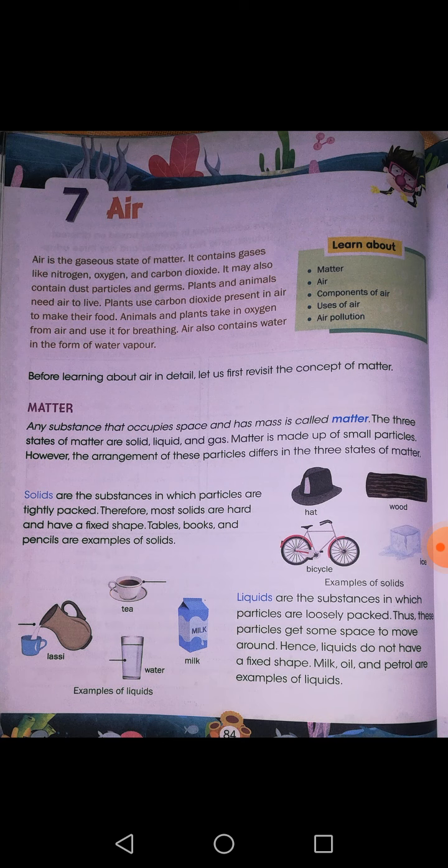When you went to school, your class teacher did your sitting arrangement, right? In that way, the particles in solids, liquids, and gases also have an arrangement. This arrangement is from nature — by nature, it is. How are they arranged? Let us see. First, solids: in solids, the particles are tightly packed. Tightly packed means there is no space between them — they sit together without any space. That is why a solid has a definite, fixed shape. Examples of solid are table, book, and pencil. Solid is hard and has a fixed shape because the particles have no space between them.